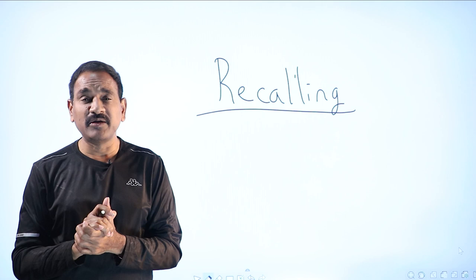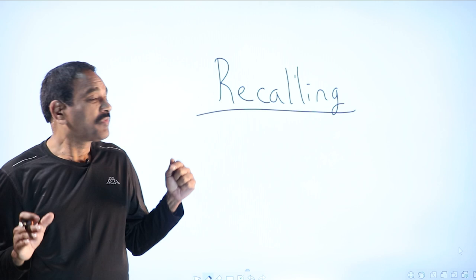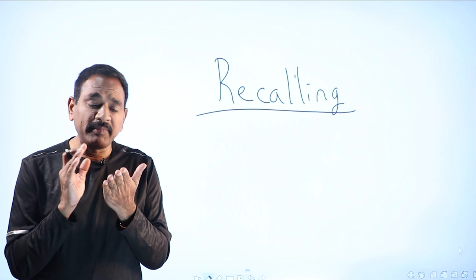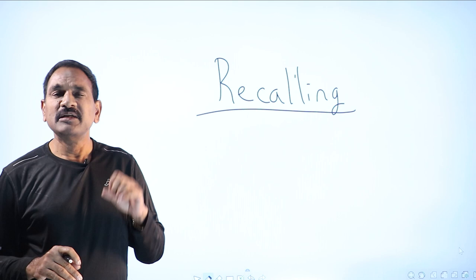In case you are not able to remember, you should open the book again and just check wherever you think you missed out. That one you should quickly revise. If we can do this reading and recalling, that is very important. Many of us do remembering practice, but recalling practice we don't do.